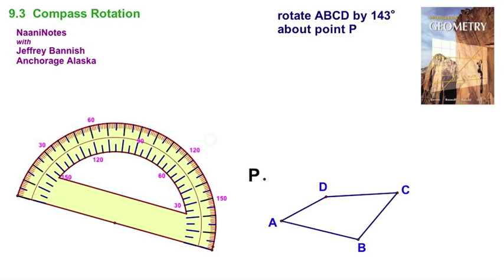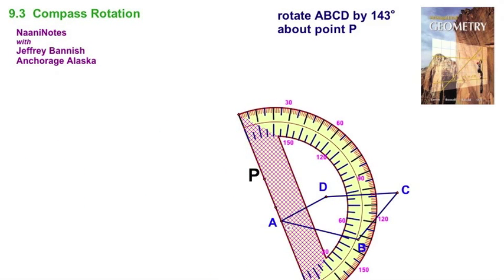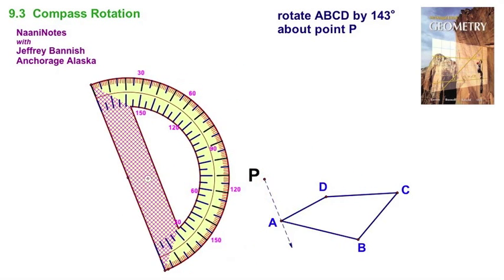We're going to start by drawing segment PA. Just take your straight edge and draw a ray or segment PA. Now, we're going to measure 143 degrees. And it should be stated first that if I didn't specify direction, we're going to say it's counterclockwise.